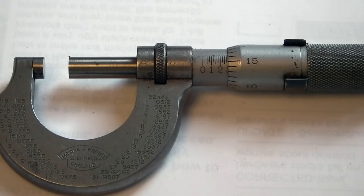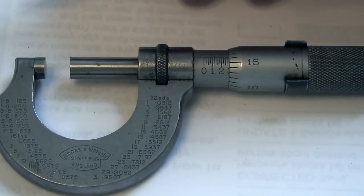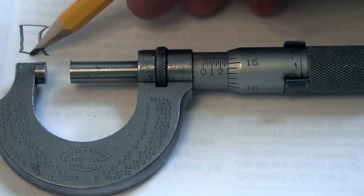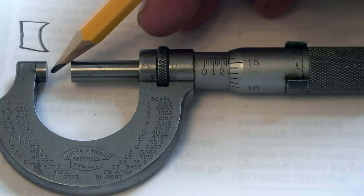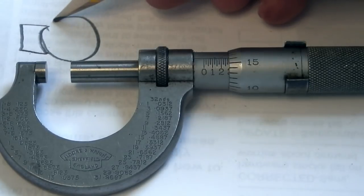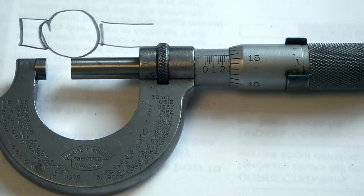Now another problem you get with your micrometer if you're using it for lathe work all the time and you do quite a bit, is that the anvil, which is this part here, will wear like this, so you will end up with a dip in the middle where you're constantly measuring over round bars.